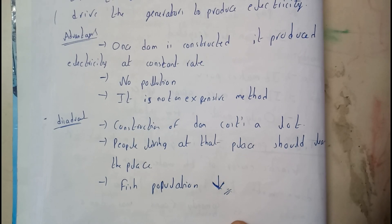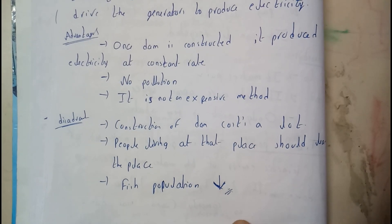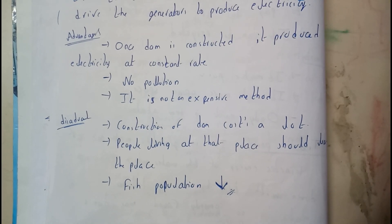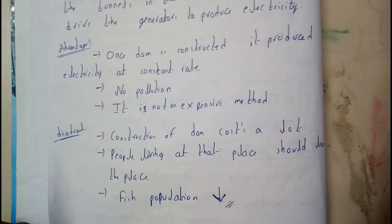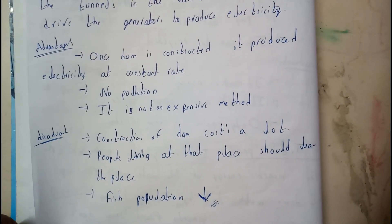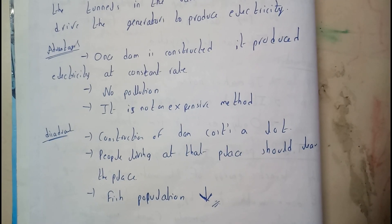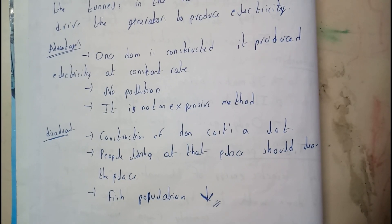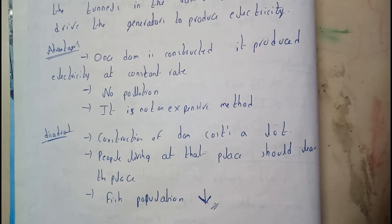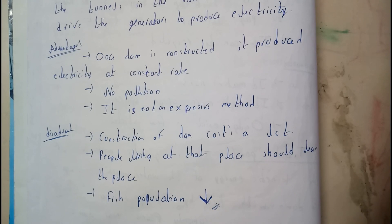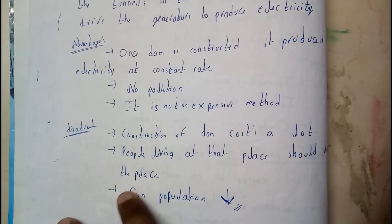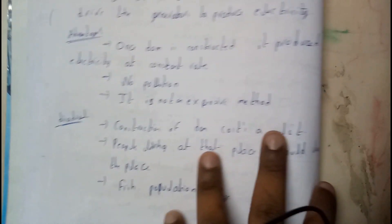Disadvantages of hydroelectric power: construction of the dam costs a lot; we need a particular area which must be cleared and certified; we need to compensate people who lived there, obtain the land, and get government approvals — it is a long process. Additionally, the fish population decreases, which indirectly means we are damaging our ecosystem.